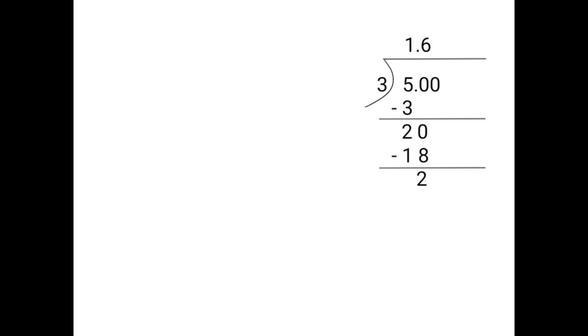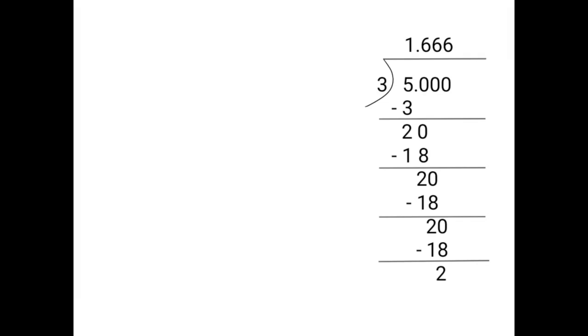Take another 0 and bring it down. 3 sixes are 18. 20 minus 18 is 2. Take another 0 and bring it down. The division keeps on continuing after the decimal point and you will get the same remainder. You are not getting the remainder 0. If the division keeps on continuing after the decimal point and the remainder is the same number after subtracting, then such a decimal form is called a non-terminating recurring decimal form.